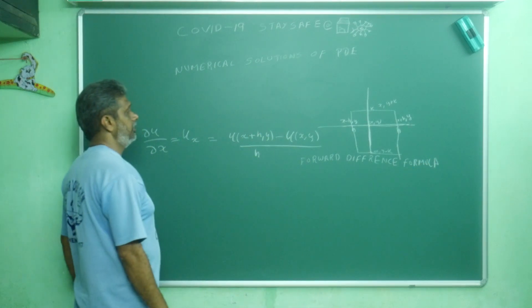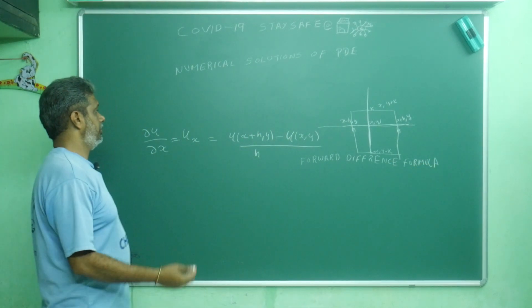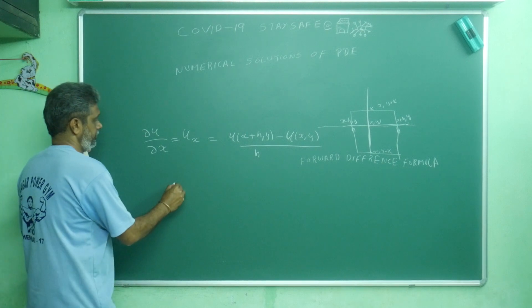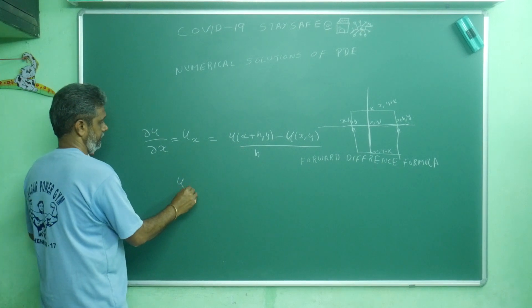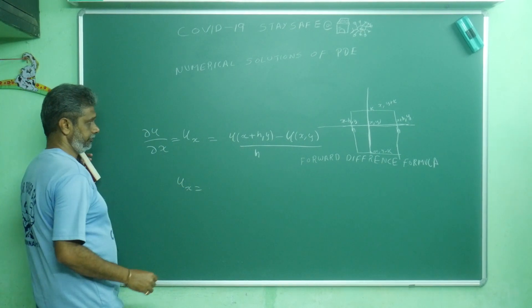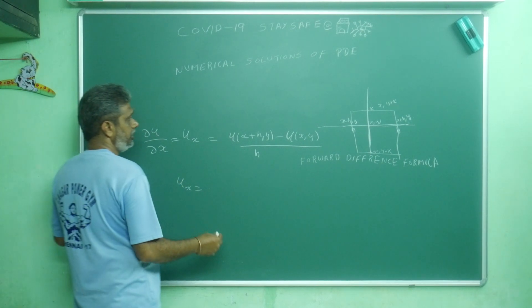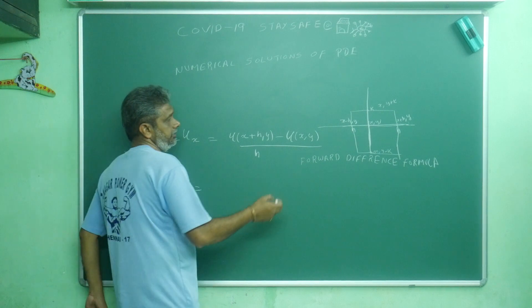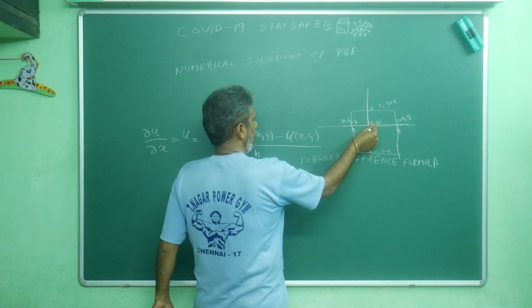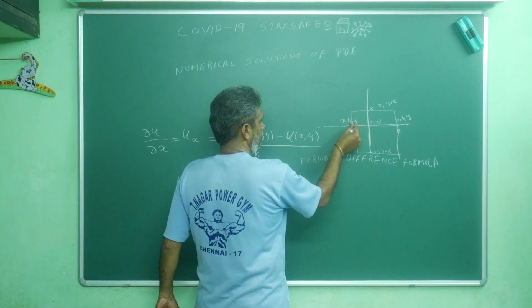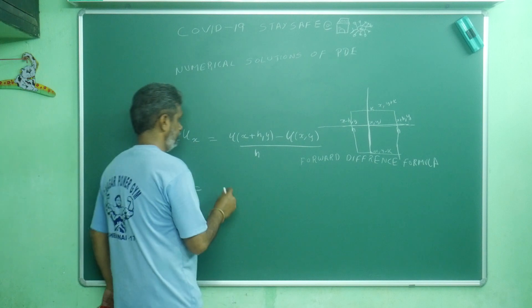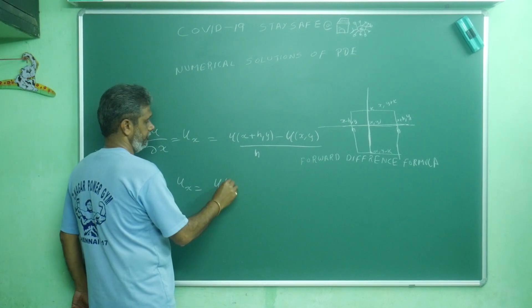For the backward difference formula, similarly for ∂u/∂x, we use the value at x and the value at x−h.